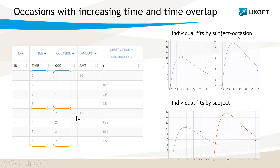If there is some time overlap between the two occasions — for example, at time 3 — then the overlap between two time points of two different occasions creates a washout, so occasion 2 will not depend on occasion 1 in Monolix.